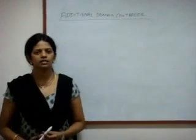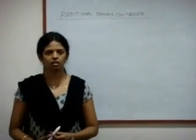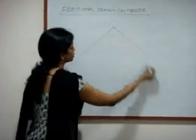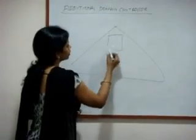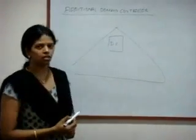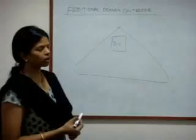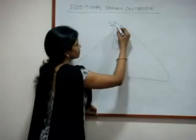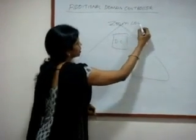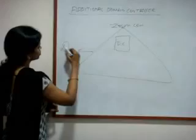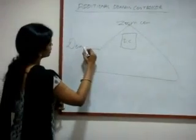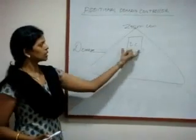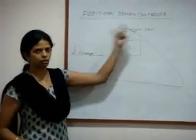Hello everyone. In this video we will discuss about traditional domain controller. Till now we have already discussed about a domain, like how the domain is configured. When you install Active Directory services in a workgroup server operating system, it becomes a server called DC, and whatever name you give it becomes the name of the logical structure that is the domain. That is, when you configure a DC, it logically forms a secure boundary called a domain, and whatever name you give will be the name of that particular domain.